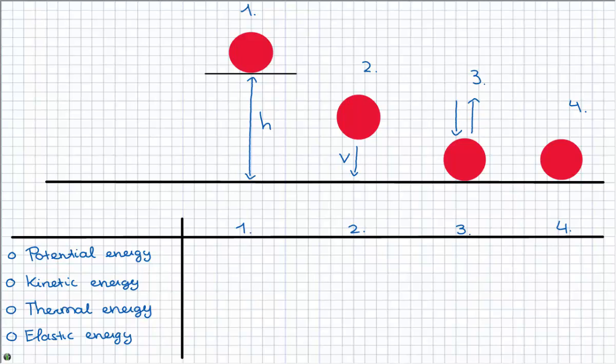For situation 1 which types of energy are there? Potential energy since the ball has a certain height. There is no kinetic energy since the ball is not moving. But there is thermal energy because the ball has a certain temperature.